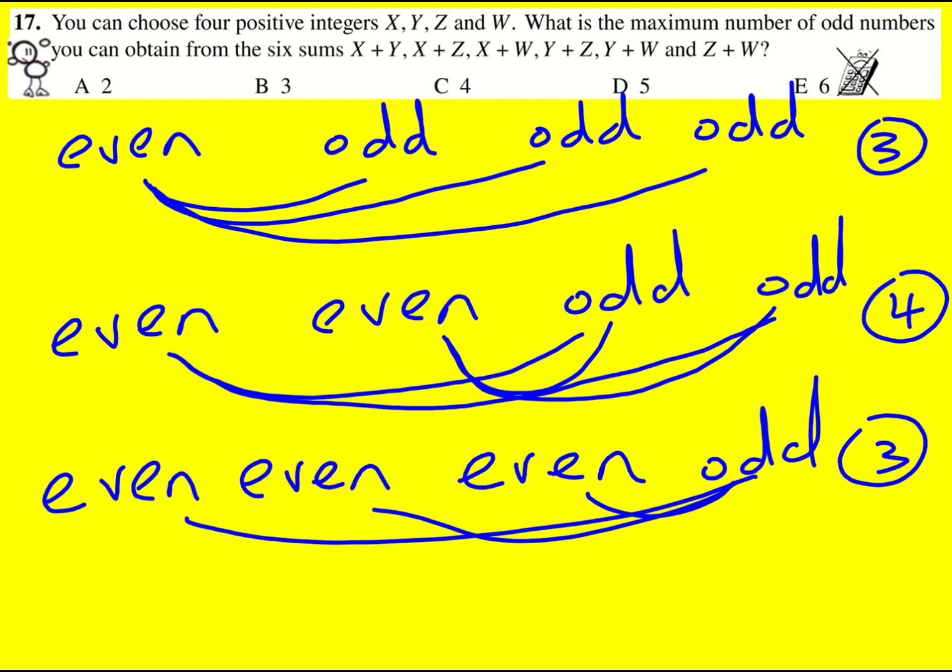So it was zero for when there's no evens and zero for when there's four evens, so clearly the maximum is going to be four.